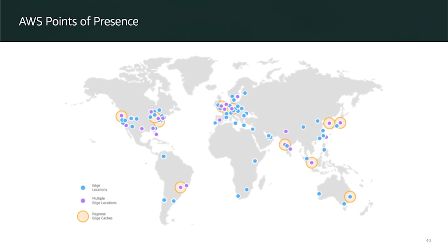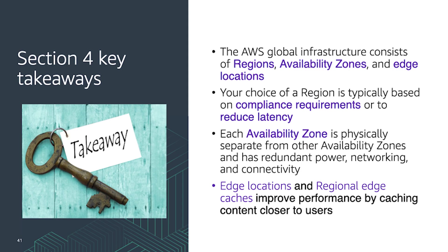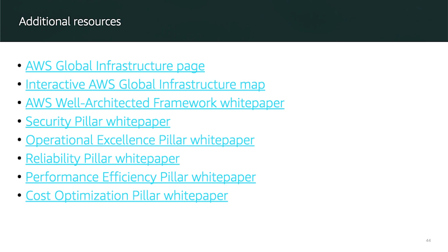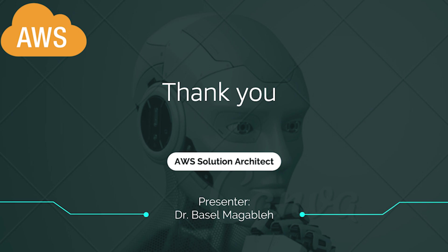In this module, we learned how to define a cloud architecture, describe how to design and evaluate architectures using the Well-Architected Framework, explain the best practices for building solutions on AWS, and describe how to make informed decisions on where to place AWS resources. Additional resources are available if you want to learn more, including the AWS Global Infrastructure and the AWS Well-Architected Framework whitepaper. Thank you for watching this video and see you in the next one.